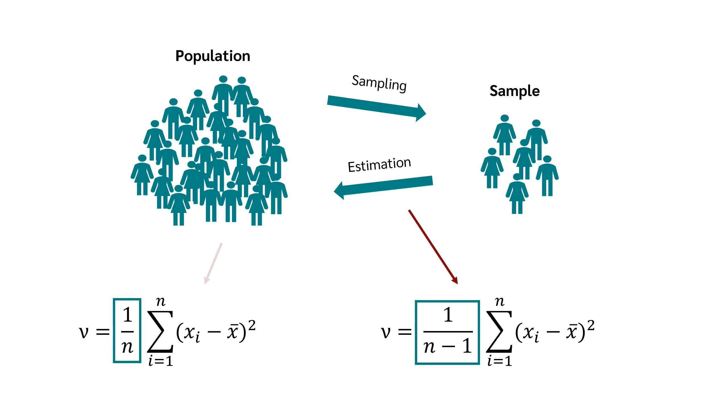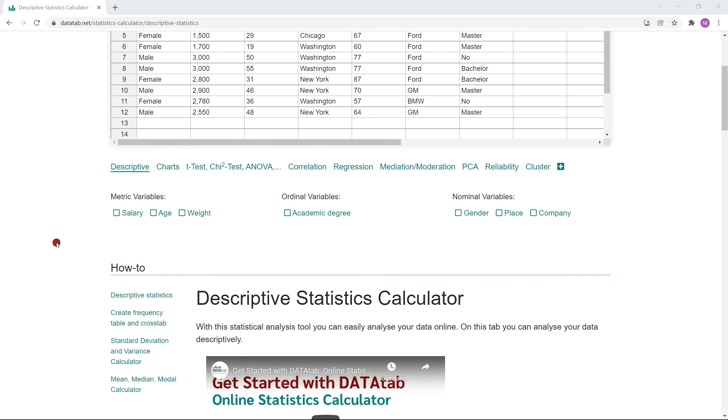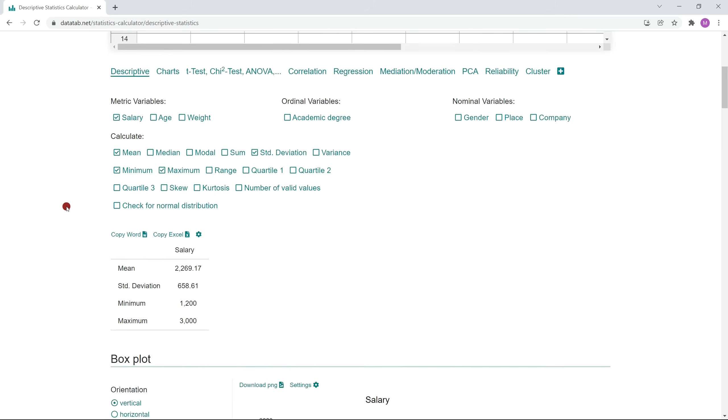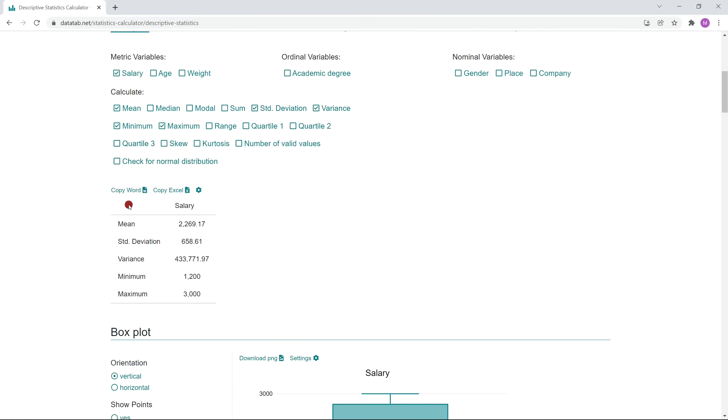If you want to calculate the variance, you can easily do this online with Datatab. Just visit datatab.net, copy your data into this table and then you select the variable you want to analyze. Further, you simply click on the variance and you will get the variance output in a very uncomplicated way. So, I hope you liked the video and see you next time. Bye bye.